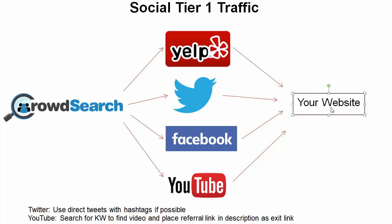There are a couple of ways to go about doing this. I'm going to show you a method of using CrowdSearch plus search, then to the social tier one traffic, and then going to your website. I listed Yelp, Twitter, Facebook, and YouTube because they're some of the biggest ones that I like to use for my own campaigns.